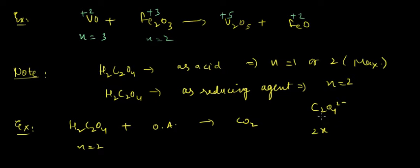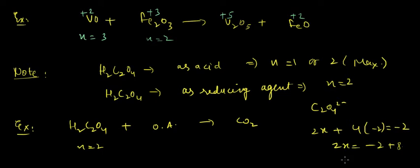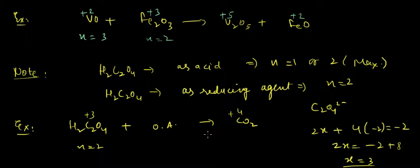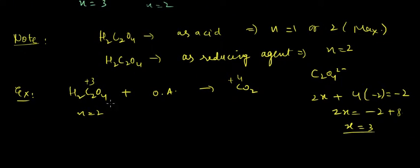C2O4^2- is the ion. The oxidation state of carbon: x + 4×(−2) = −2, so 2x = −2 + 8, giving x = +3. Converting from plus 3 to plus 4 involves 2 moles of carbon, hence n-factor would be 2.